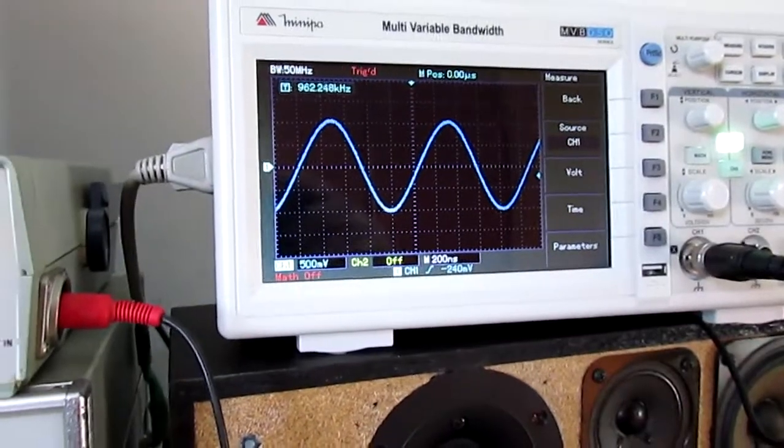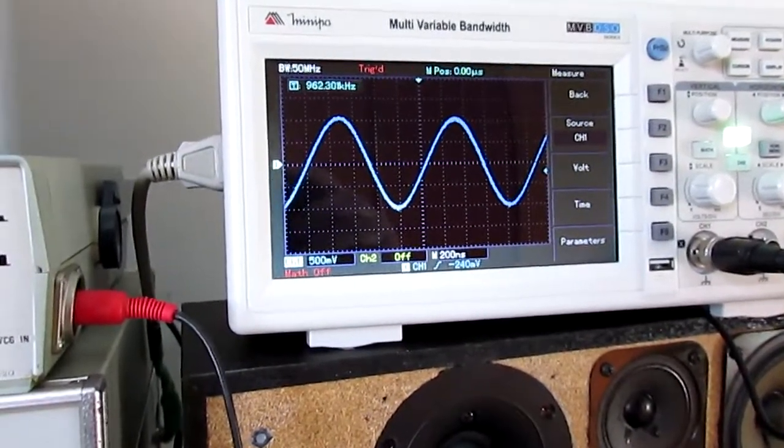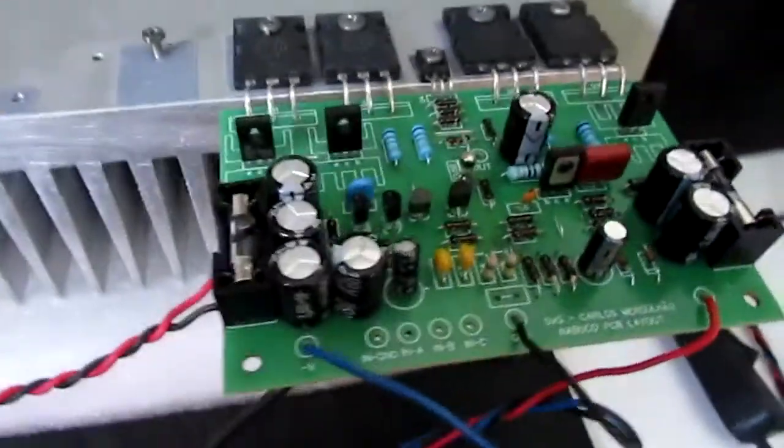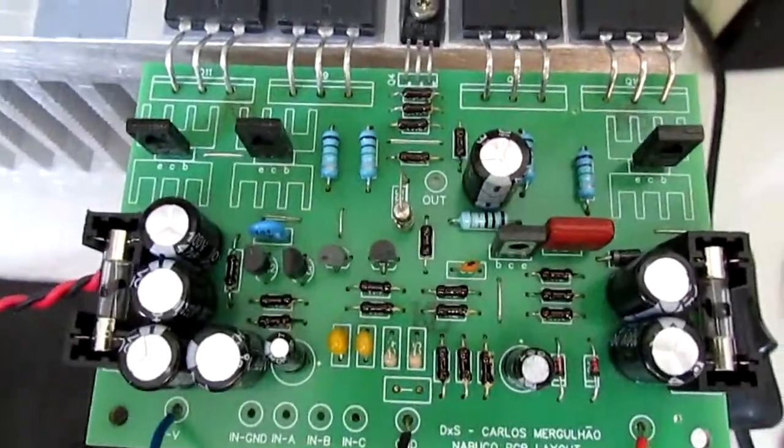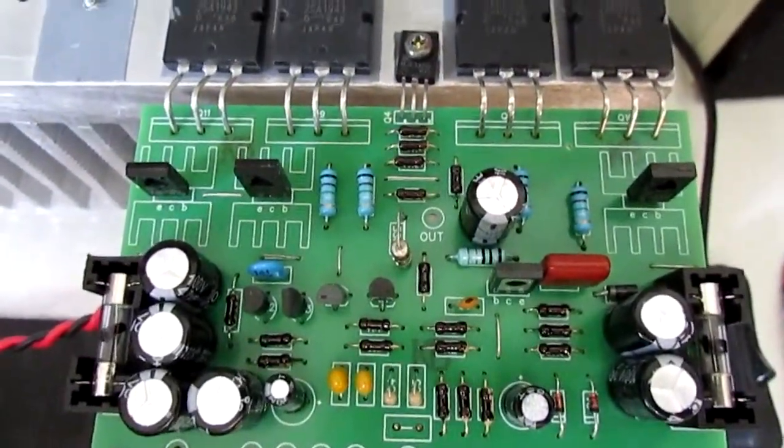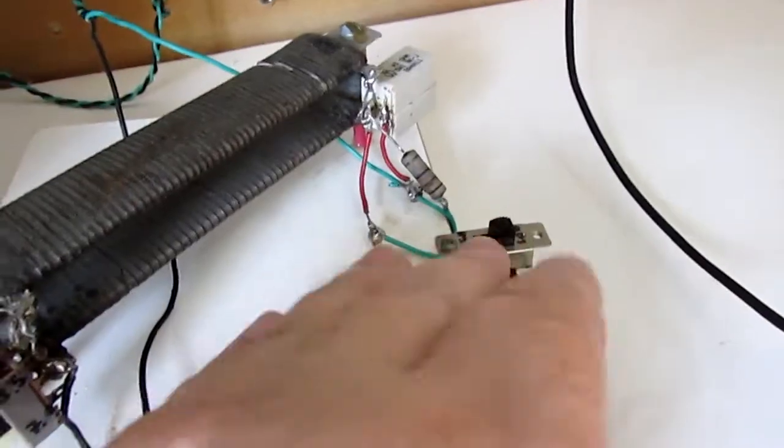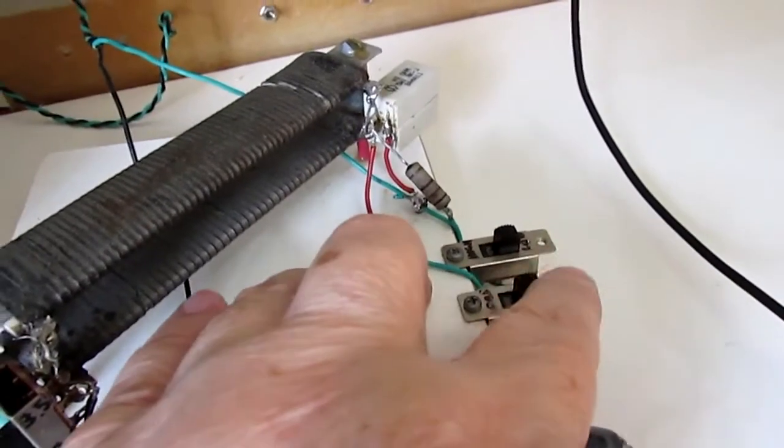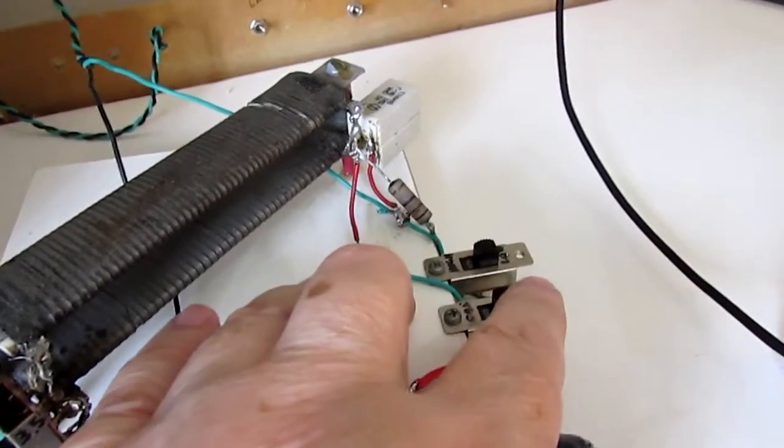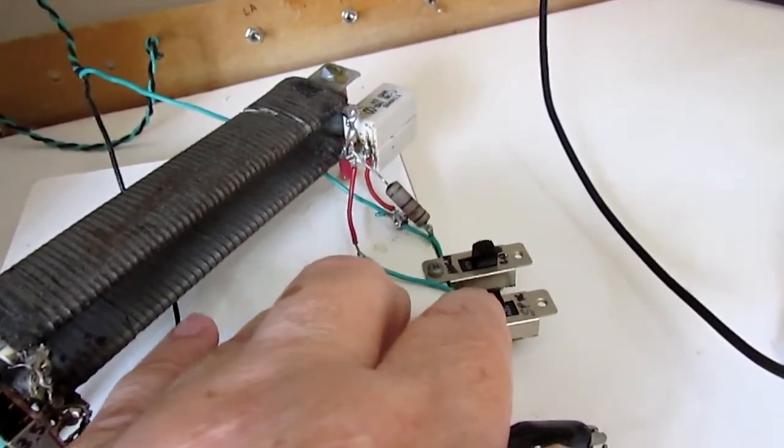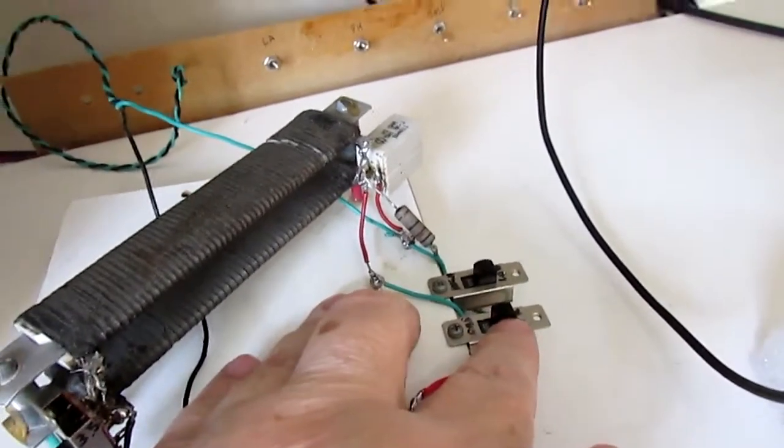Simulator says minus 3 decibels, the amplifier goes to 600 kilohertz, and here you see I'm switching from speaker to load, 4 ohms speaker, 3.5 ohms load, here's the difference.